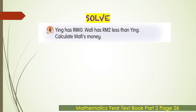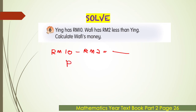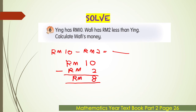Example seven. Ying has 10 ringgit. Wafi has 2 ringgit less than Ying. Calculate Wafi's money. We subtract: 10 ringgit minus 2 ringgit to find Wafi's money. Write the number sentence first — 10 ringgit minus 2 ringgit. In standard written method, 10 minus 2 is equal to 8. The unit symbol is RM, so Wafi's money is 8 ringgit.